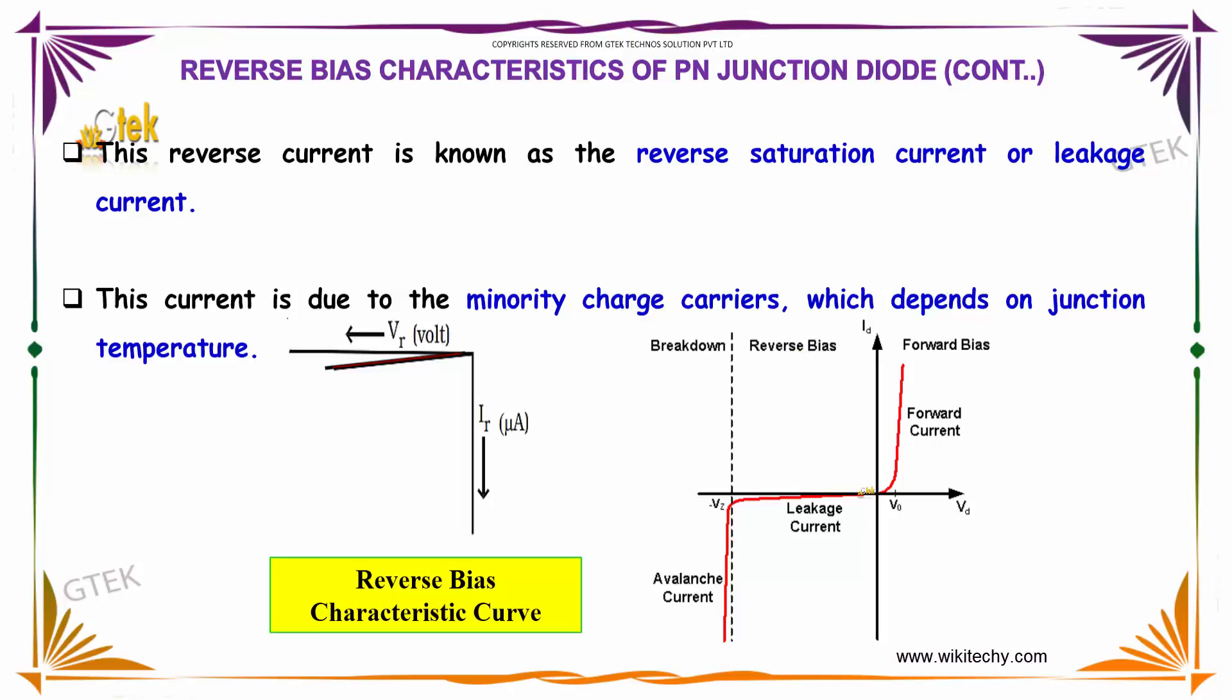Here you can see that in the reverse bias region, the negative values are shown. In the forward bias region, you can see the forward current. And here is the breakdown region.